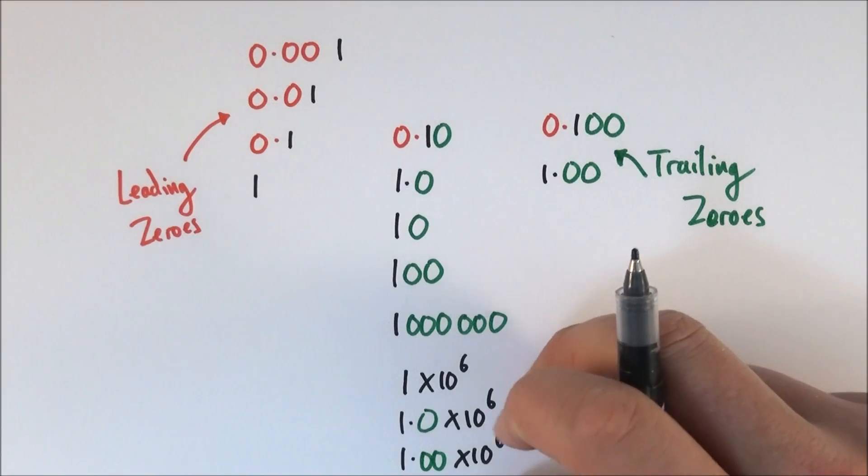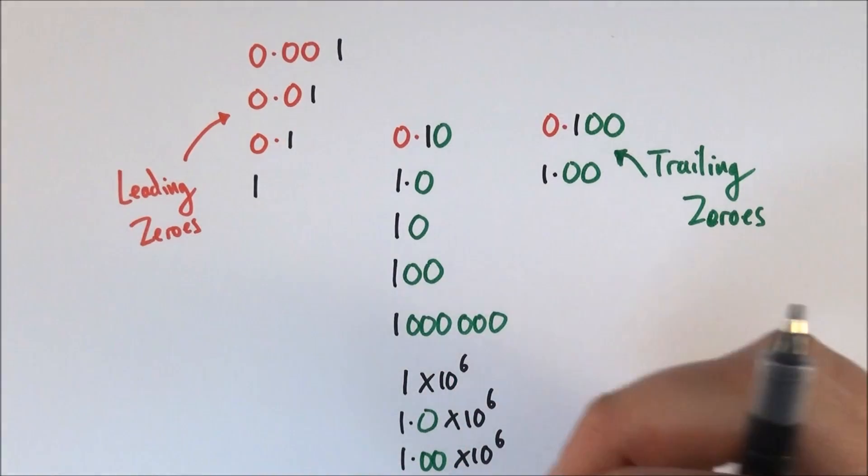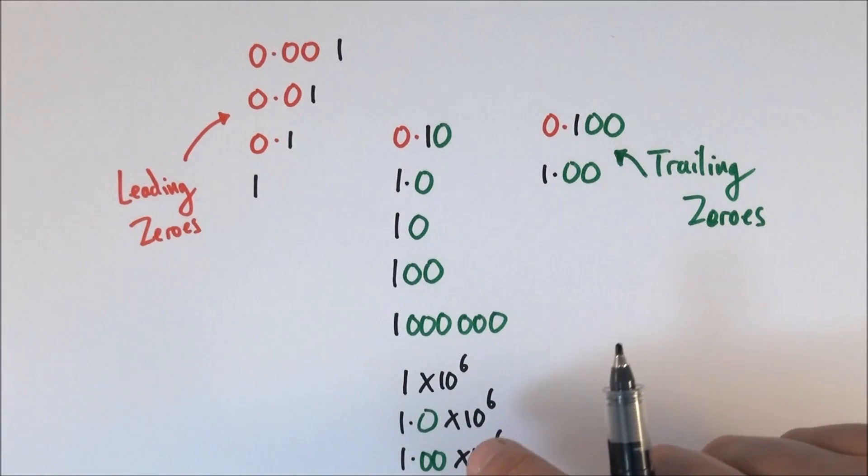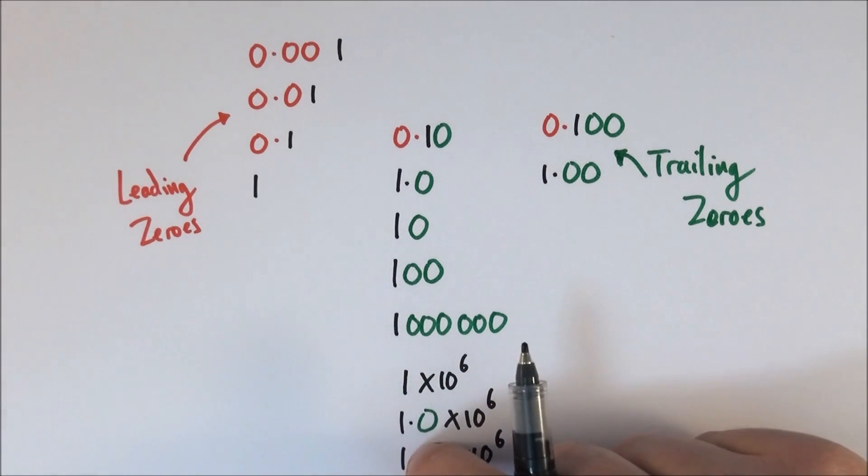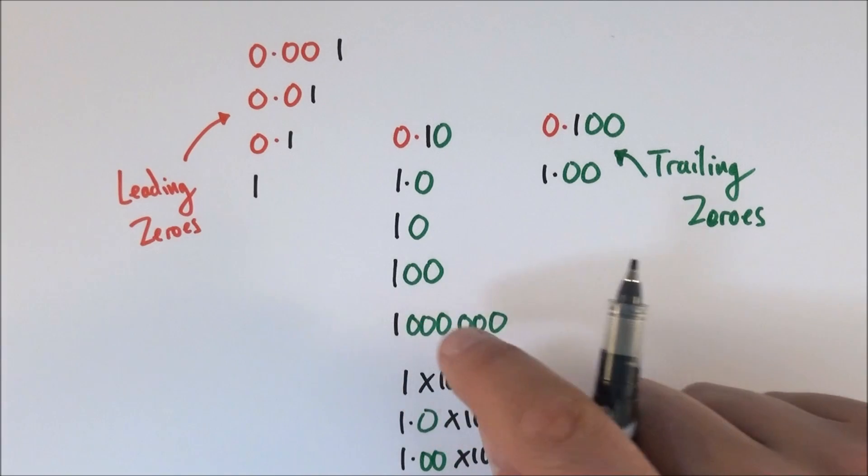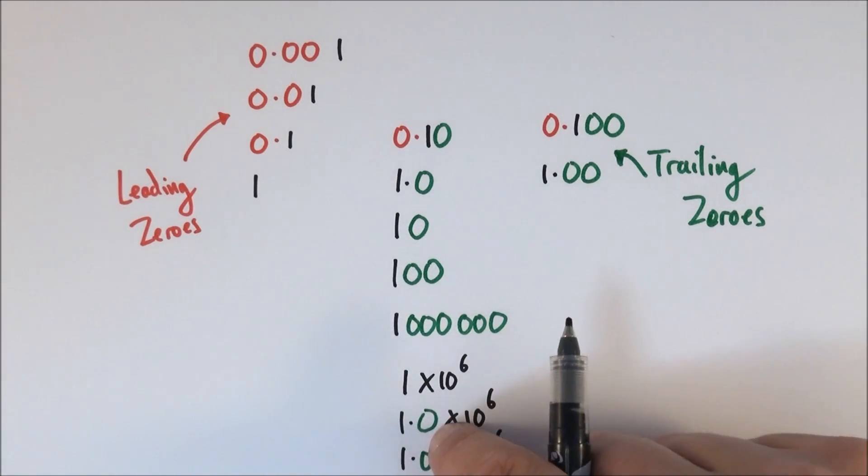So if you've got big numbers it's good practice to put things in standard form because standard form not only lets you see the size of the number but also how many significant figures, and especially if you've got numbers like a million that you've got to give to three significant figures this is the correct way to do it.